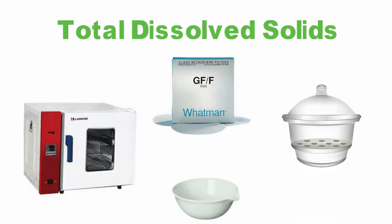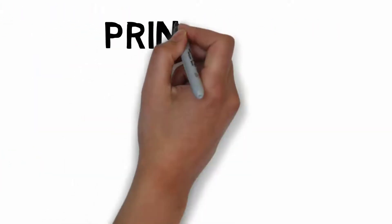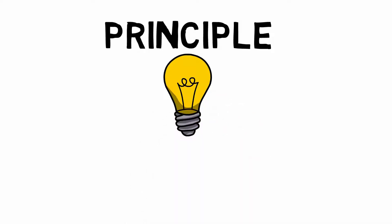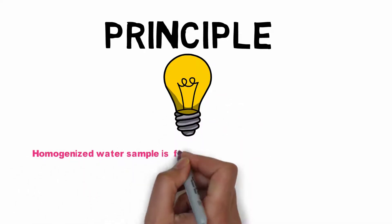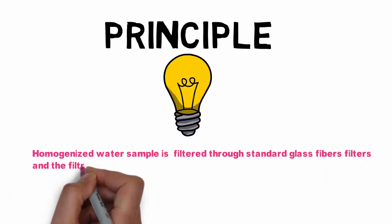Now let's find out how to measure TDS. The principle: a homogenized water sample is filtered through a standard glass fiber filter, and the filtrate is evaporated in a weighing dish and dried to a constant weight.